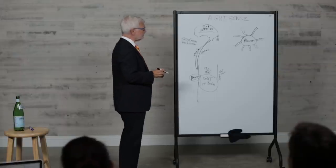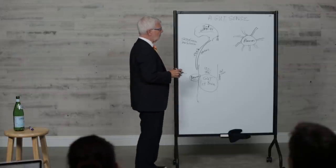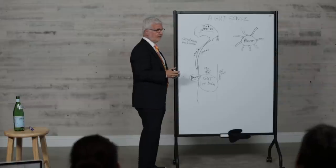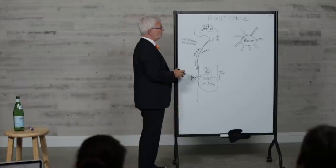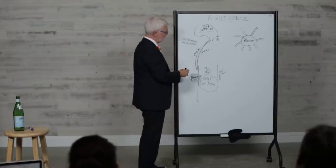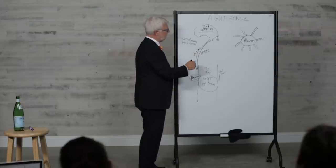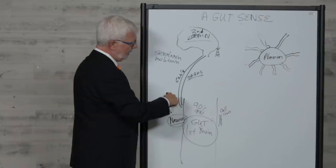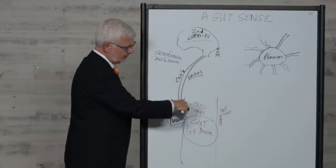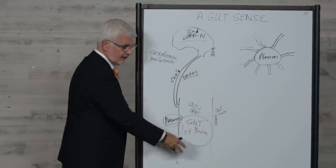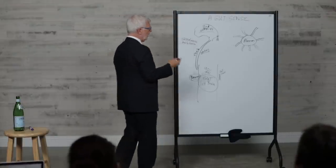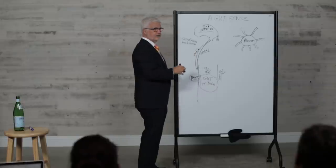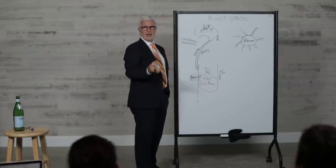The basic concept of how the brain talked to the gut was that there was a very large nerve called the vagus nerve that ran from the brain down to the heart, lungs, liver, and then down to the gut.